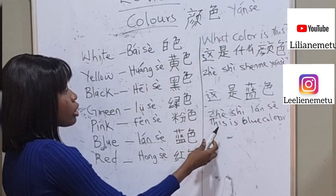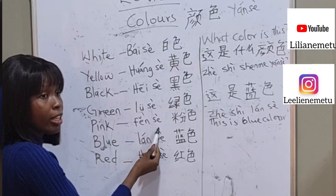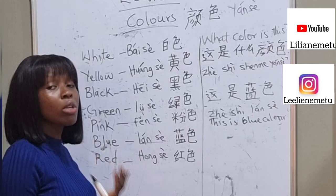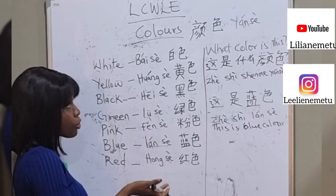Let's go back to the colors again: white — bái sè, yellow — huáng sè, black — hēi sè, green — lǜ sè, blue — lán sè, pink — fěn sè, red — hóng sè. There are still many other colors like brown. If you have further questions, feel free to ask me or check a dictionary. Thank you — xièxie, zàijiàn!